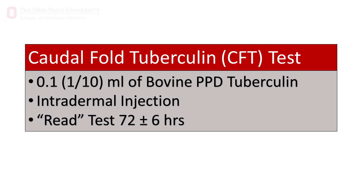The caudal fold tuberculin test involves the intradermal injection of 0.1 mL — one tenth of a mL — of USDA bovine purified protein derivative (PPD) tuberculin into either the right or left side of the caudal tail fold. It involves reading of the test by visual observation and palpation 72 plus or minus 6 hours following injection, by the same accredited veterinarian that performed the injection. Any response is considered a responder and does not necessarily indicate active tuberculosis infection. However, it does require reporting to the state or federal veterinarian, who will conduct additional testing to rule out or confirm active infection.